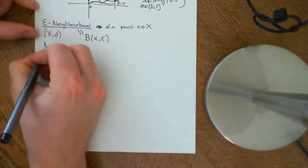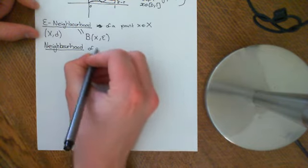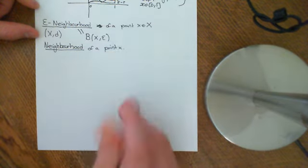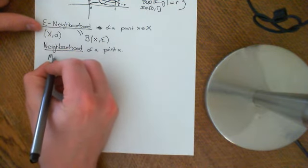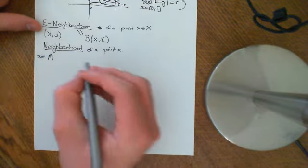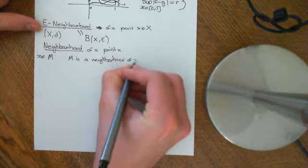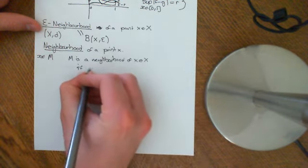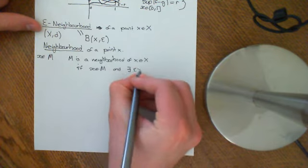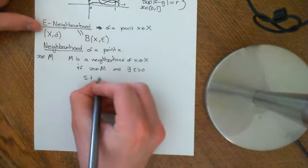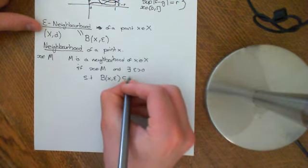The next definition is the definition of a neighbourhood. A set big M is a neighbourhood of a point little x, which is an element of big X, if firstly little x is an element of big M, and there exists an epsilon greater than zero such that the epsilon neighbourhood — that is, the ball of radius epsilon around the point x — is completely contained within the set M.